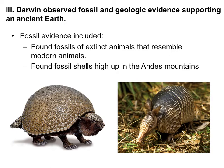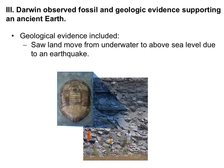Another realization that went against what people thought at the time was that the Earth was different previously. Darwin found fossil and geological evidence of an ancient, different Earth. Fossil evidence included extinct animals like the glyptodon, which resembled the modern armadillo. He also found fossil shells high up in the Andes Mountains, giving evidence that either the mountain used to be below sea level or the sea used to be higher. He even witnessed an earthquake that caused land from underwater to move above sea level.